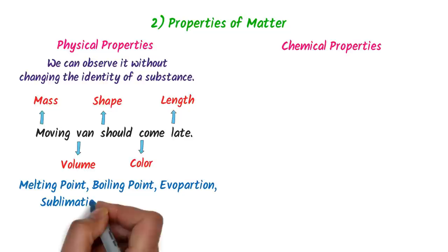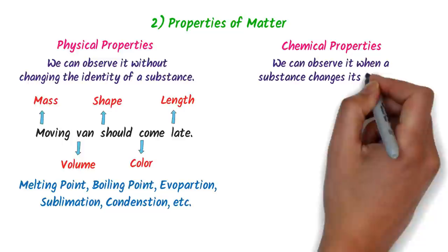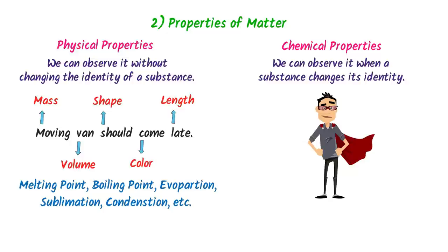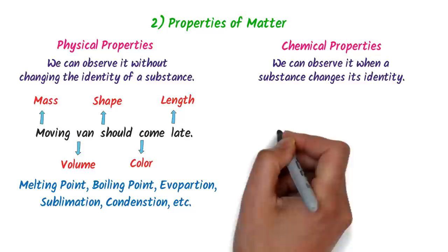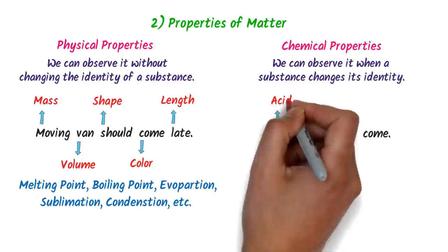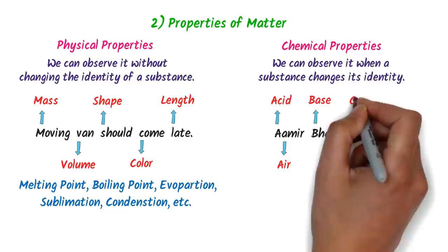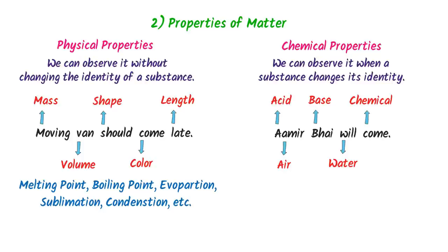We can observe chemical properties when a substance changes its state. To remember chemical properties, I use the mnemonic 'Amir Bhai will come.' Here A stands for acid, another A stands for air, B stands for base, W stands for water, and C stands for chemical. So reactions of acid, air, base, water, and chemicals all possess chemical properties.